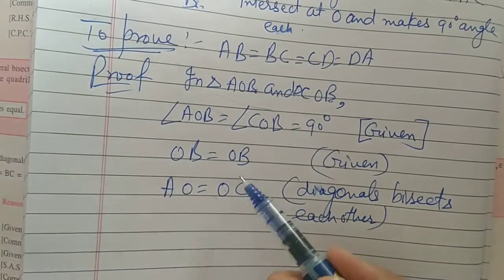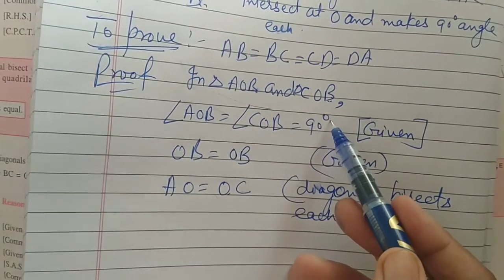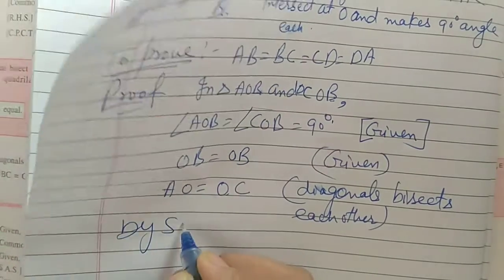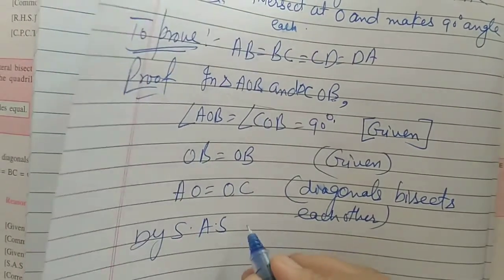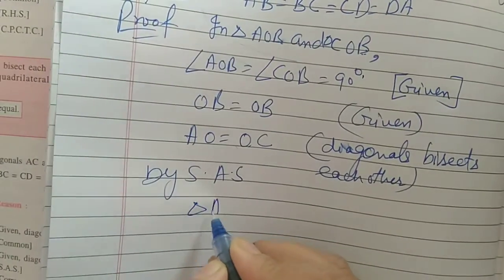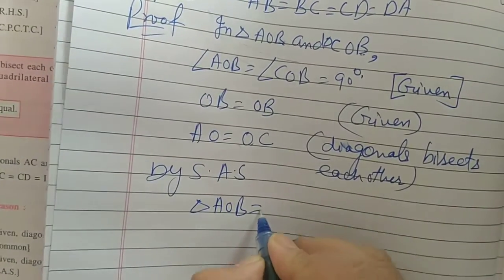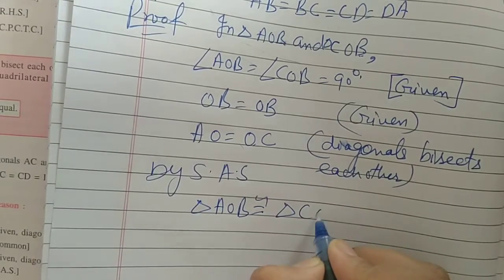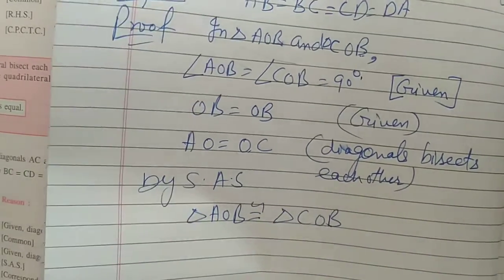So, which condition applies? Two sides and one angle. So by SAS criteria, we have triangle AOB is congruent to triangle COB.